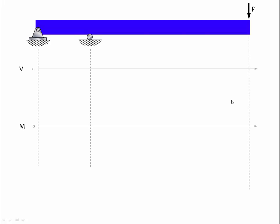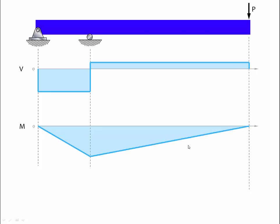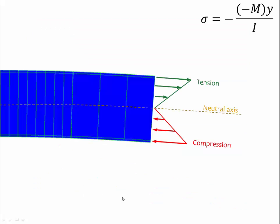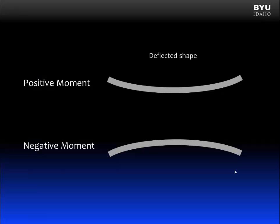Now let's consider a beam like this — it looks like a diving board. If we plotted the shear diagram it would look something like this, and the moment diagram would look something like this. We see that the moment is negative over the entire length of the beam. So the deformed shape of the beam would be bent downward. If we were to zoom in and look at the stress at this point, we would see that the tension and compression have reversed. That's because now we have a negative moment being applied to the beam. When y is positive, the negative sign results in a positive stress, which is tension. And that makes sense because the top of the beam is getting stretched and the bottom is being compressed.